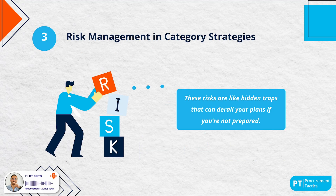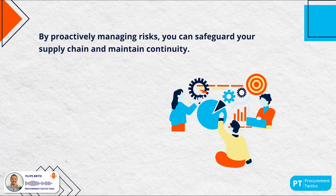Risk management is a vital component of any category strategy. Identify and assess potential risks such as supply chain disruptions, market volatility and supplier insolvencies — these are hidden traps that can derail your plans if you're not prepared. Develop contingency plans and diversify your supplier base to mitigate these risks. Regularly update your risk management strategies to ensure they remain effective, safeguarding your supply chain and maintaining continuity.